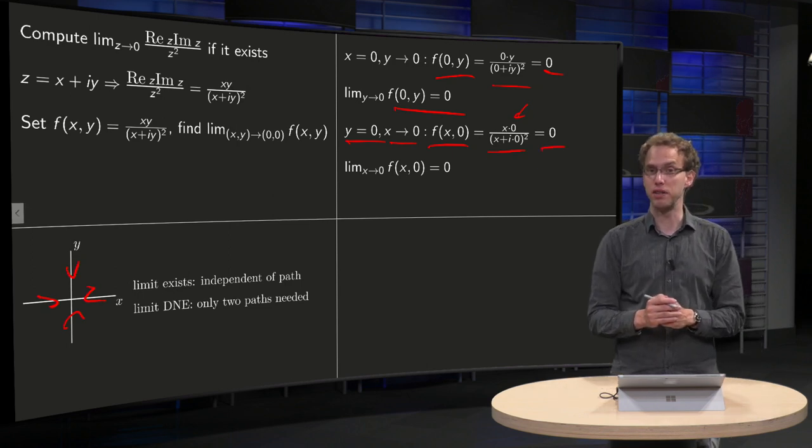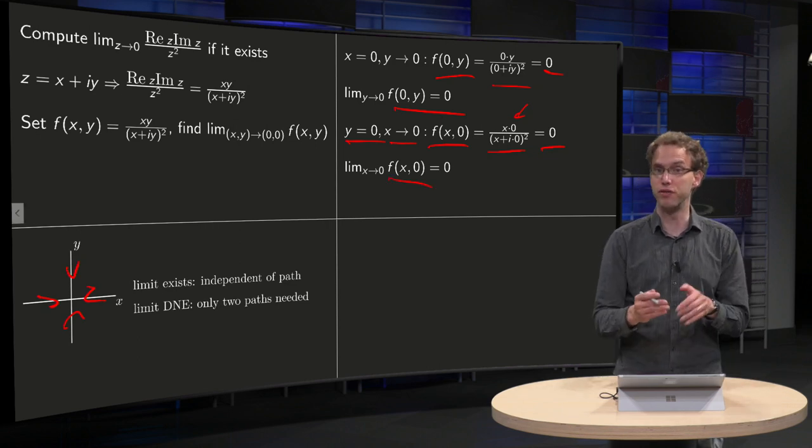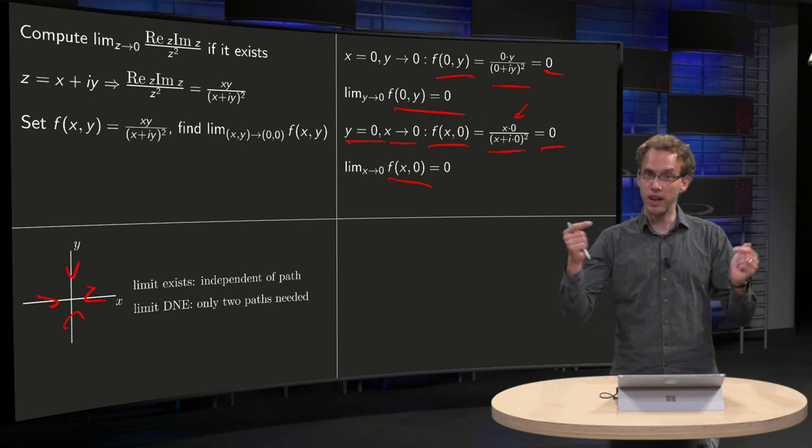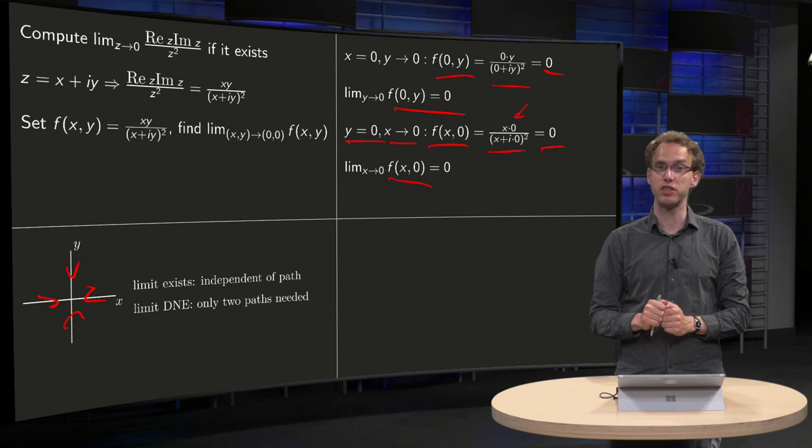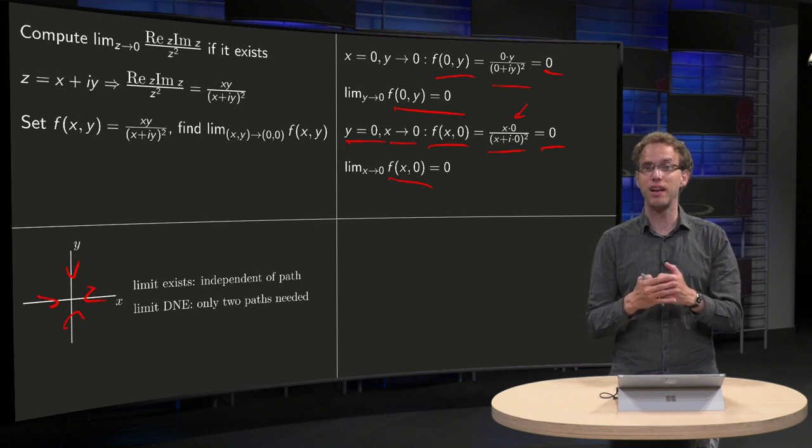And then what happens if you take the limit, well that one is trivial, you take the limit x to 0 of 0, well it's just 0 of course. So we see if you go along the x-axis or if you go along the y-axis towards the origin, f of x and y becomes 0. So question, have you now shown that the limit equals 0?